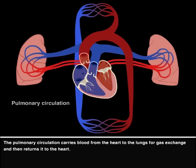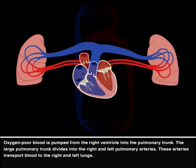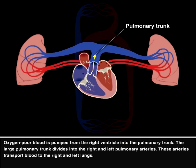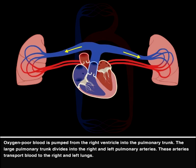The pulmonary circulation carries blood from the heart to the lungs for gas exchange and then returns it to the heart. Oxygen-poor blood is pumped from the right ventricle into the pulmonary trunk. The large pulmonary trunk divides into the right and left pulmonary arteries, which transport blood to the right and left lungs.